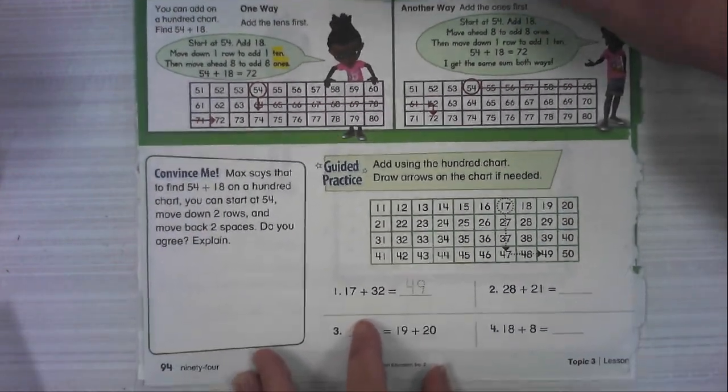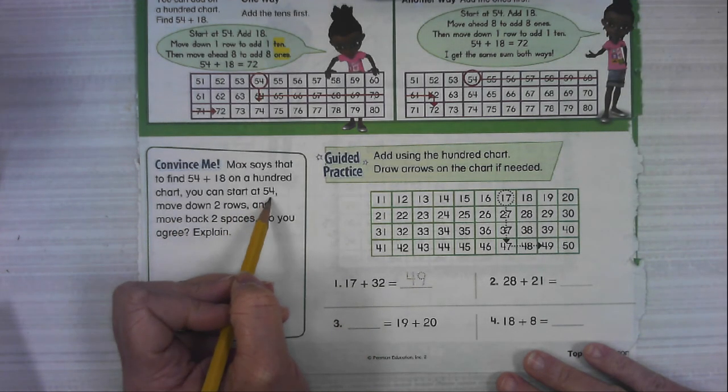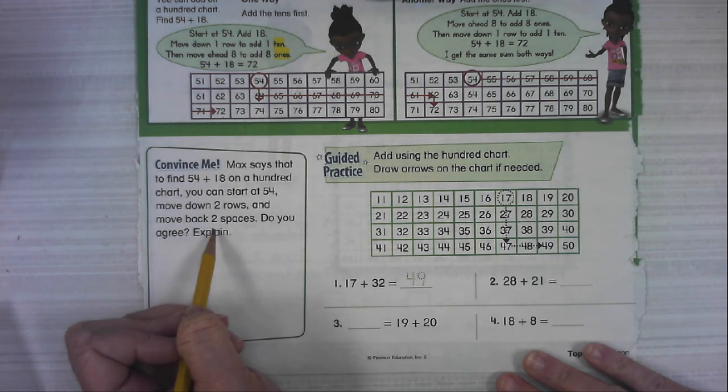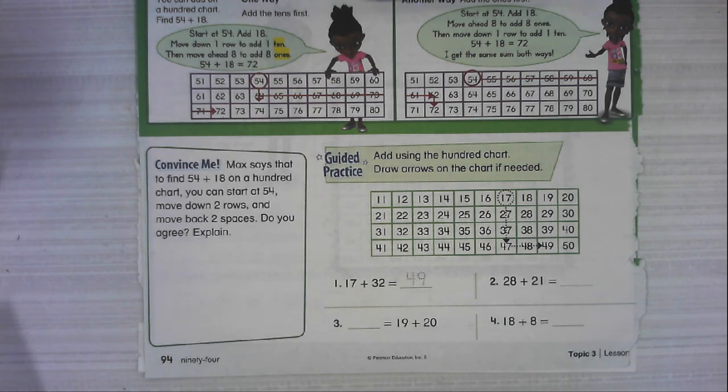Alright, Ole Max says to find 54 plus 18 on a hundreds chart. You can start at 54, move down two rows, and then move back two spaces. Do you agree?